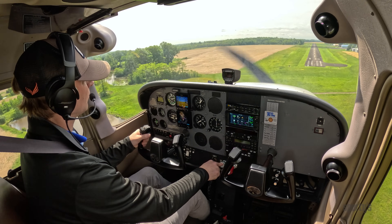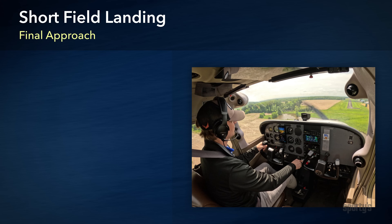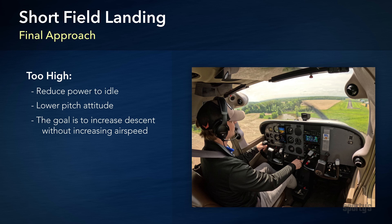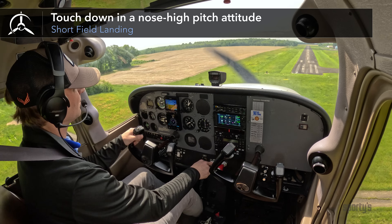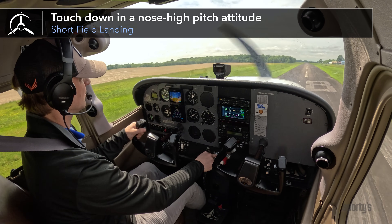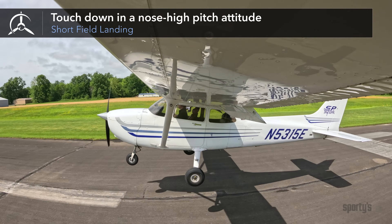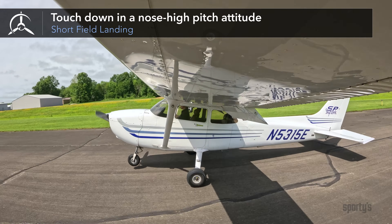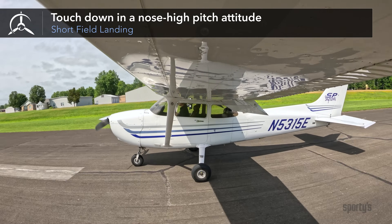Use power and pitch together. If you feel you are too high, reduce power and lower the pitch attitude to increase the descent without increasing airspeed. If too low, increase power and raise the pitch attitude to slow the rate of descent without lowering airspeed. Touch down in an attitude that will produce a power-off stall when you reduce the power to idle. Don't reduce the power too soon before touchdown or you may drop in and get a very hard landing.